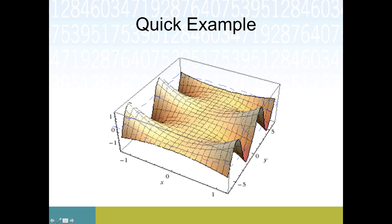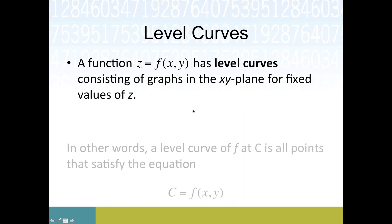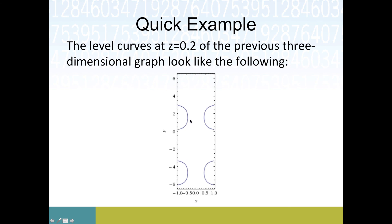Those dotted lines correspond to the level curve of the function at that height — only the x's and y's change, not the height. This produces those little circular pieces sliced through the graph, giving a preliminary look at what 3D graphs and their level curves look like. That wraps up section 7.1; we'll come back in section 7.2 and start talking about rates of change and derivatives.